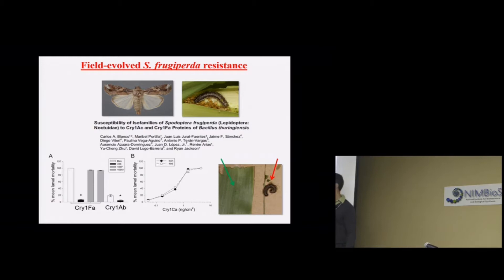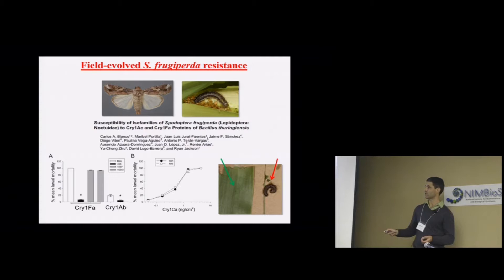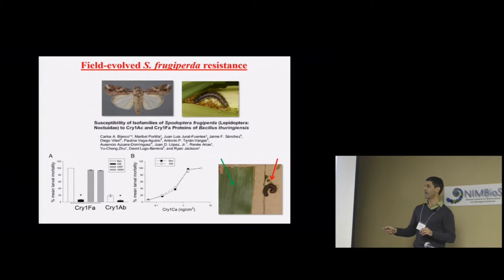In bioassays, when we put these larvae on transgenic corn expressing Cry1Fa, we only see about 10% mortality in the resistant strain — they're very, very resistant. When we use crosses between susceptible and resistant insects, independently of which sex carries the resistant parent, we have high levels of susceptibility similar to the susceptible parent, suggesting that resistance is recessive and autosomal, not sex-linked.